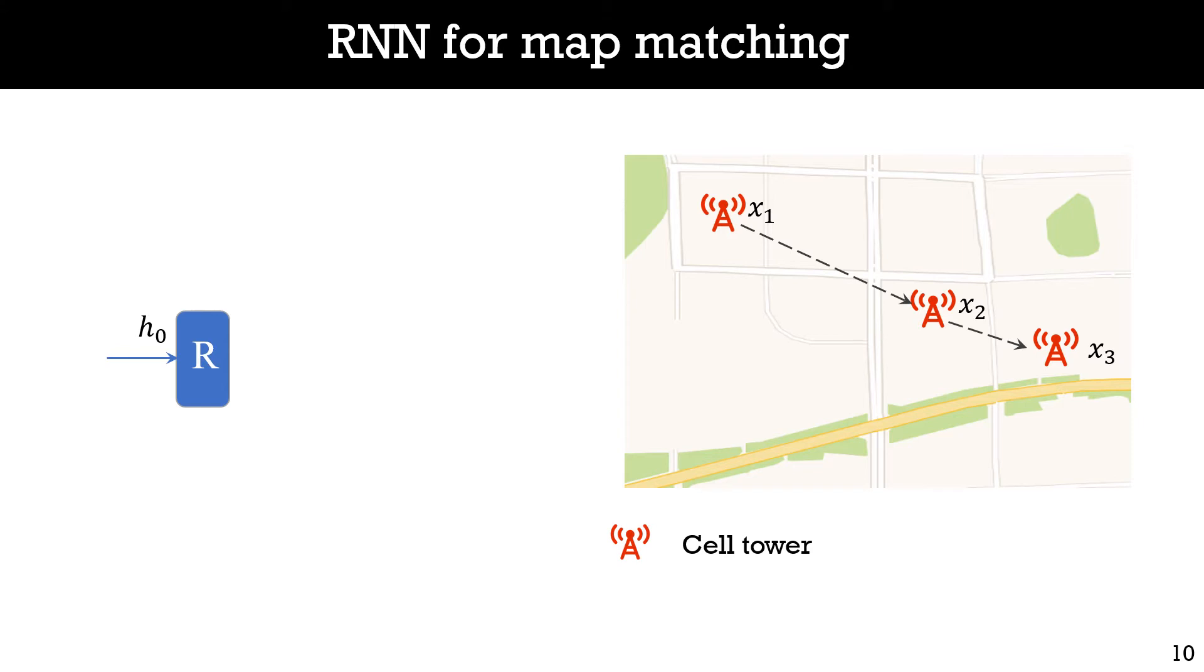We give an example to show how we apply recurrent neural networks for map matching directly. Given a location sequence of three cell towers and a well-trained recurrent model, we feed the cell towers into the model successively. For cell tower x1, the model generates the road r1 that has the largest probability in all roads. At the same time, the model generates a hidden vector h1 and uses it as an input for the next step. By continuously feeding the cell towers into the model, we obtain three roads for each cell tower. But such a matching process is concerned with three problems. Next, we provide the details of the three problems and solutions.